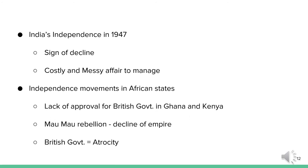British tact and diplomacy in the 1950s failed to prevent the independence movements in the African states from realizing their goals. The lack of approval for British governance in Ghana and Kenya contributed to the decline of empire, and events such as the Mau Mau rebellion in the latter country only added to the loss. Atrocity was now a commonly associated qualification for the British style of governance, as the experience of the Boer and the Mau Mau only served to enhance and magnify this image of hostility among the colonized.